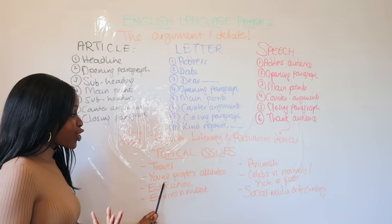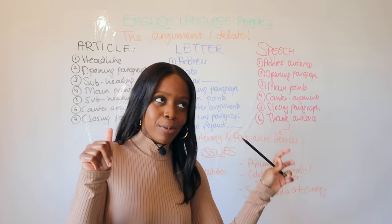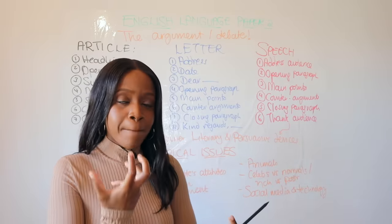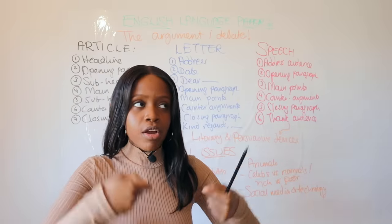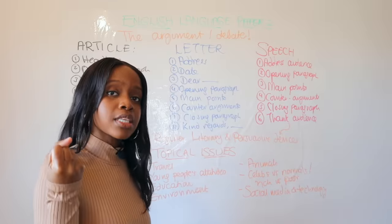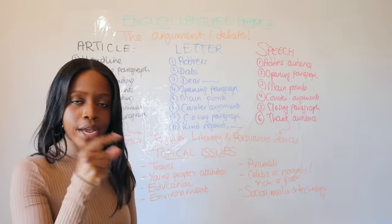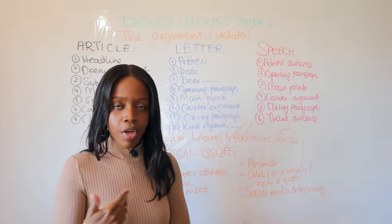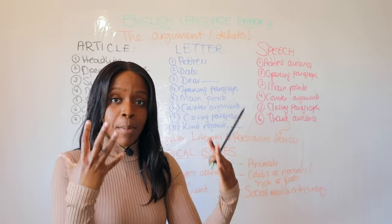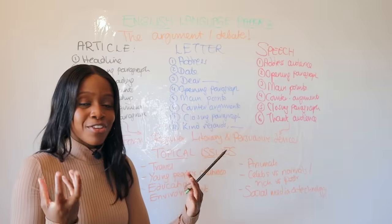Another topic is young people's attitudes — are young people too entitled, are young people snowflakes? Think about what you would argue and what you could argue against. Education always comes up in one form or another — homework, school uniform — that's something to consider for question five.